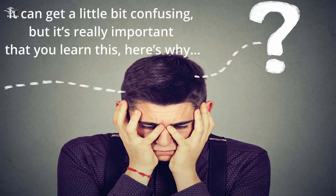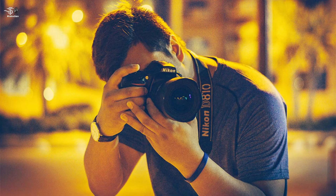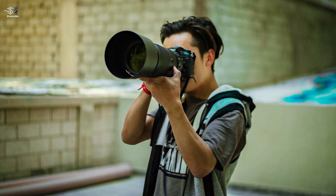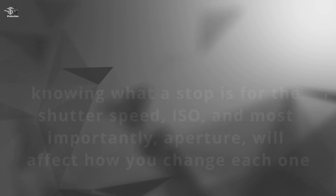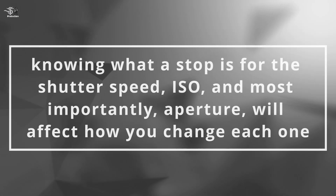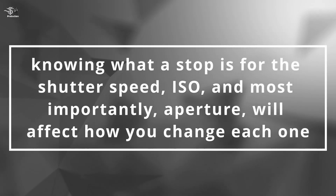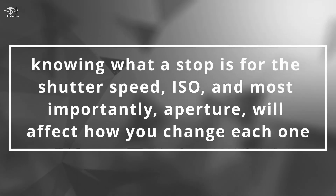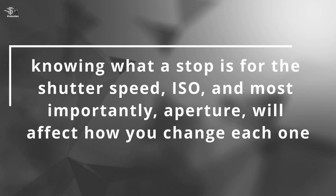It can get a little bit confusing, but it's really important that you know this. As your skills as a photographer improve and you start to shoot in manual more often, you're in charge of looking after the camera's exposure. Knowing what a stop is for shutter speed, ISO, and most importantly aperture will affect how you change each one.